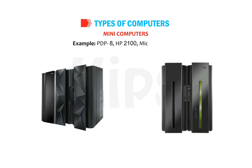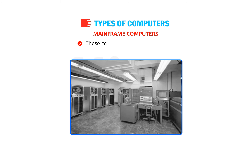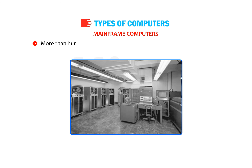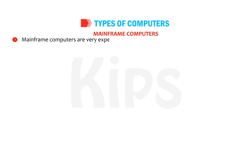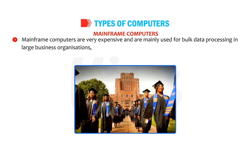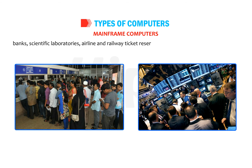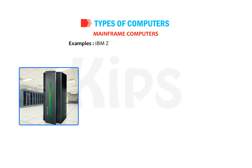Mainframe Computers: these computers are very powerful, big in size with large memory and high speed. They are designed to tackle huge amounts of data, and more than 100 users can use a mainframe computer simultaneously. These computers are used in a networked environment and are very expensive, mainly used for bulk data processing in large business organizations, universities, banks, scientific laboratories, airline and railway ticket reservations, and stock exchange markets. Examples include IBM Z-series, PDP-10 and System Z-10.